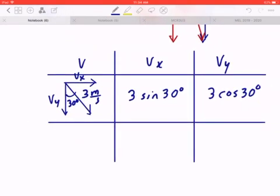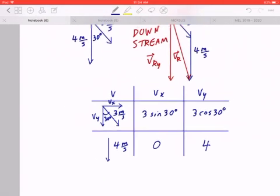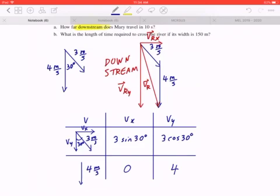Now likewise, in the second piece, 4 meters per second going south. There is no horizontal component. And the vertical component is going to be 4. And again, be mindful, we're just writing down the magnitude. So there's no negative 4 even though it's pointing south. We're just going to write down 4.